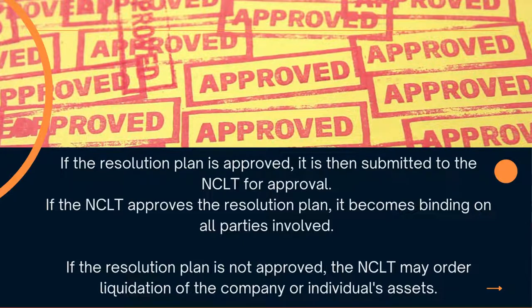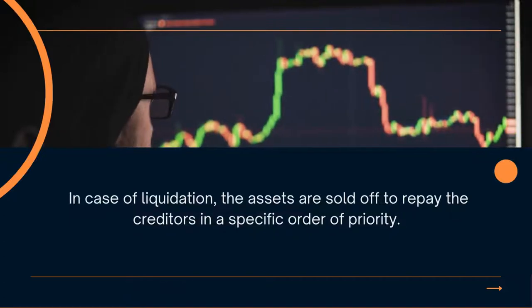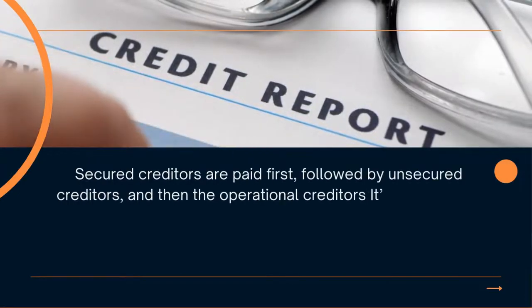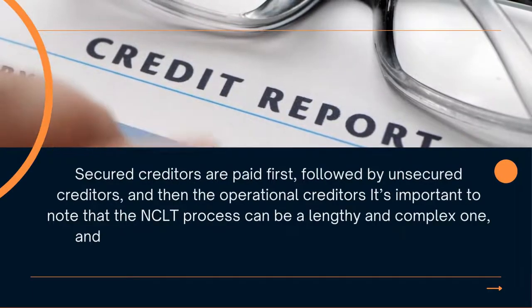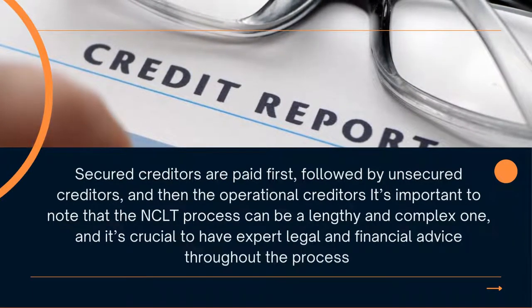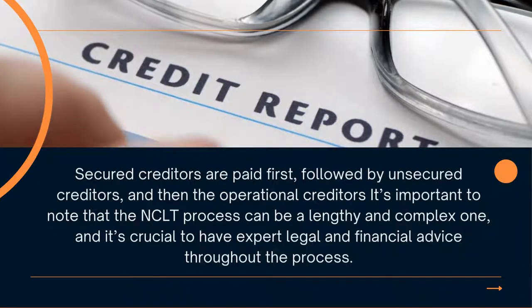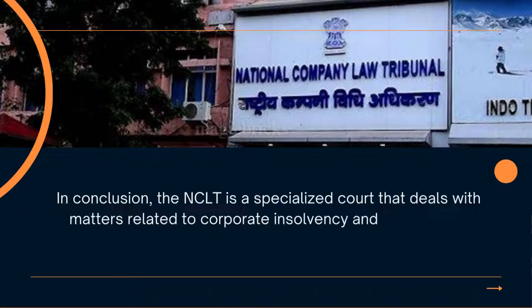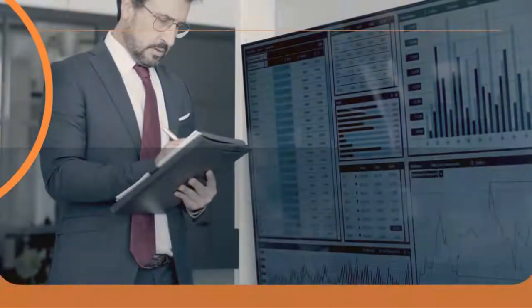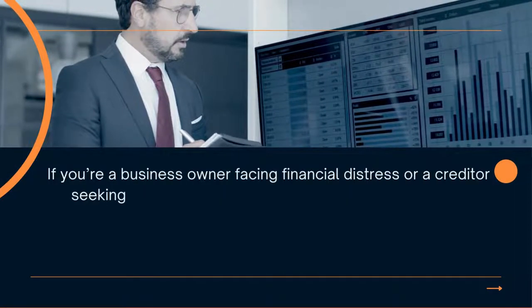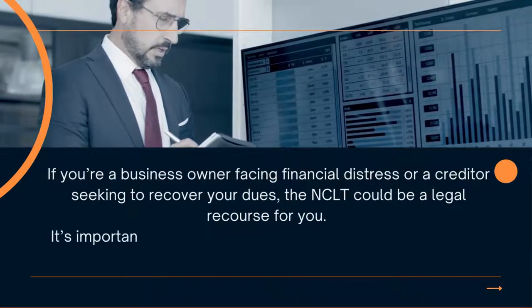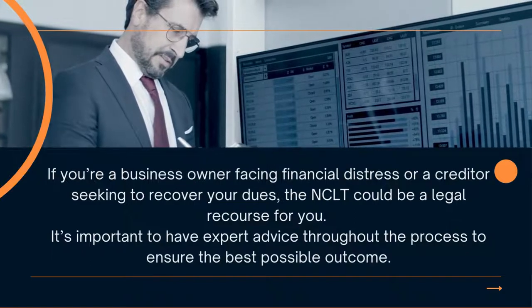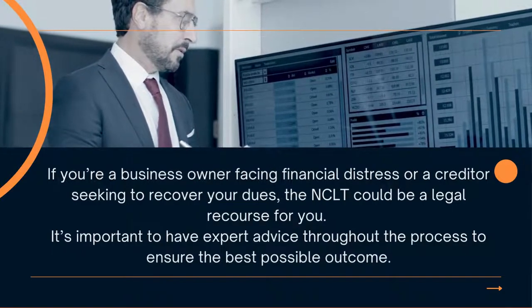In case of liquidation, the assets are sold off to repay the creditors in a specific order of priority. Secured creditors are paid first, followed by unsecured creditors and then the operational creditors. It's important to note that the NCLT process can be a lengthy and complex one, and it's crucial to have legal experts and financial advice throughout the process. In conclusion, the NCLT is a specialized court that deals with matters related to corporate insolvency and bankruptcy. If you are a business owner facing financial distress or a creditor seeking to recover your dues, the NCLT could be a legal recourse for you. It's important to have expert advice throughout the process to ensure the best possible outcome.